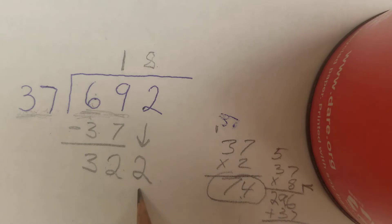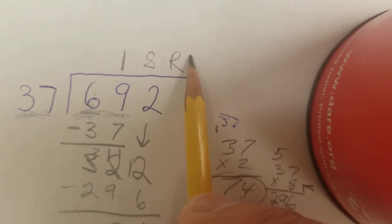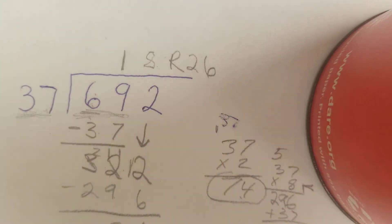8 times 7 is 56. Carry my 5. 8 times 3 is 24, plus 5 is 29. We subtract. I have to regroup. 12 minus 6 is 6. 1 minus 9 I can't do. I'm going to regroup. 11 minus 9 is 2. I have a remainder of 26. So it's R26.